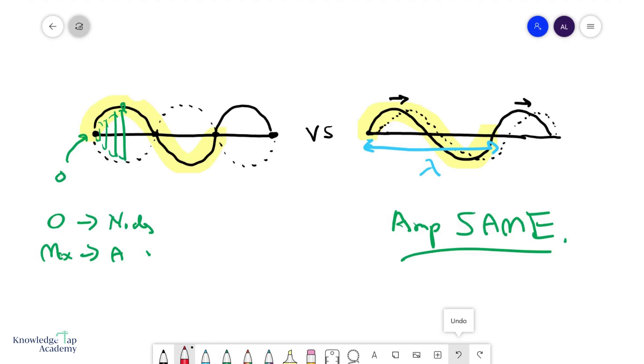We say that for a progressive wave, all particles along one wavelength have a different phase. So if we say that the phase of this particle here is zero radians, then the phase of this particle will be two pi radians, and it increases gradually throughout.